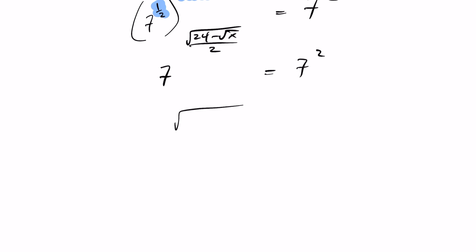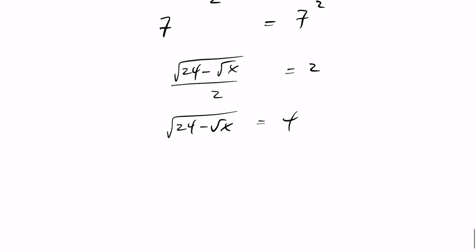So now the root of 24 minus root x over 2 must equal 2. Therefore, the square root of 24 minus root x must equal 4. And whenever you're solving a radical equation, you square both sides. This gives 24 minus root of x equals 16.